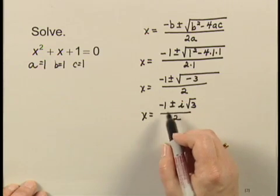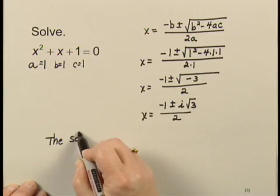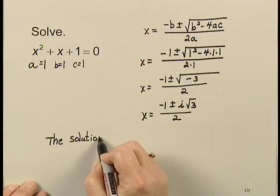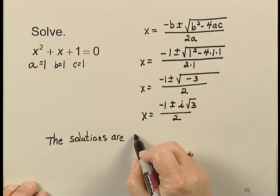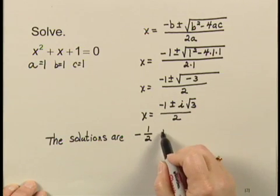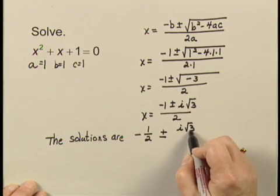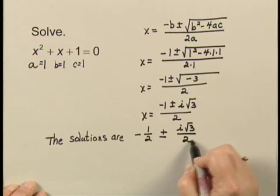We can still keep the plus or minus symbol. So we say the solutions are negative 1 half, that's negative 1 over 2, plus or minus i times the square root of 3 over 2.